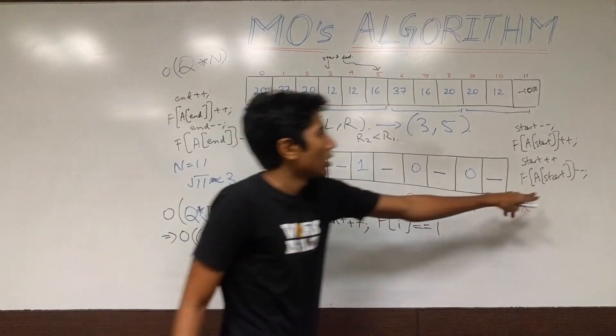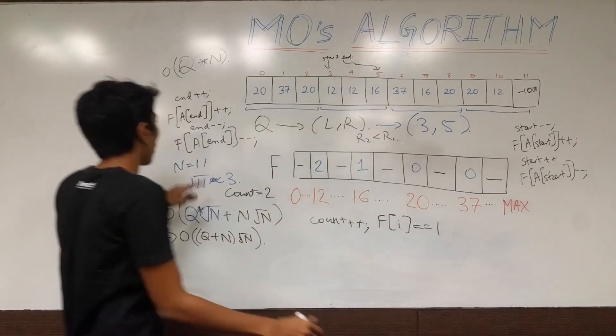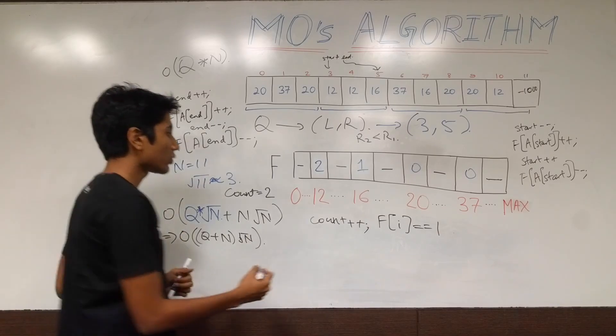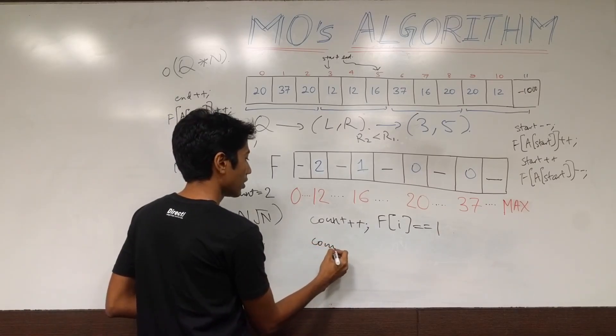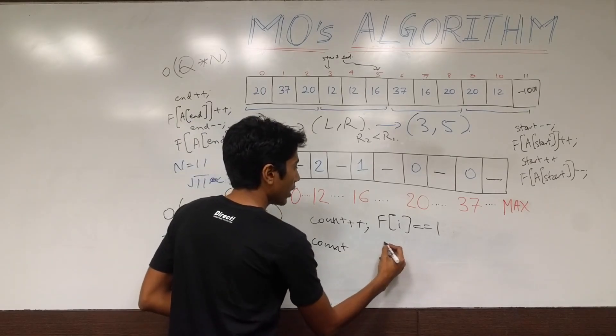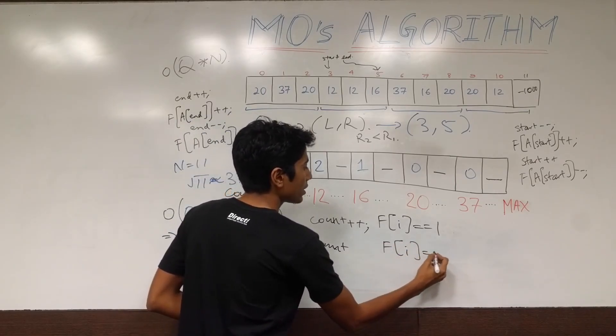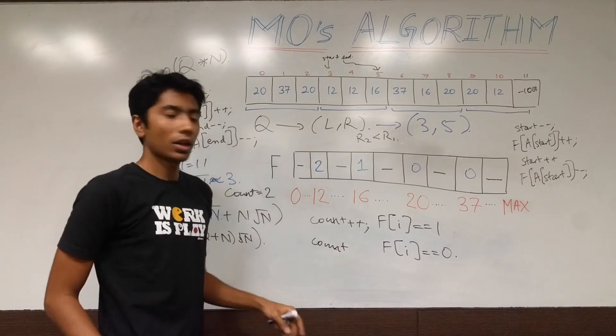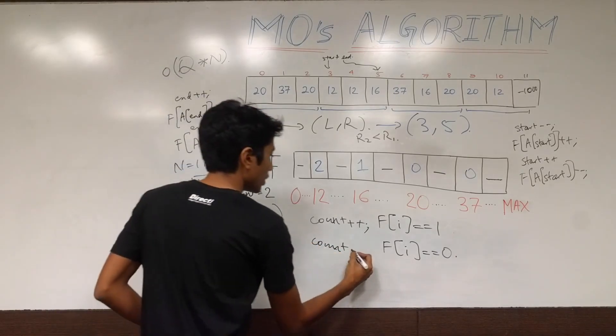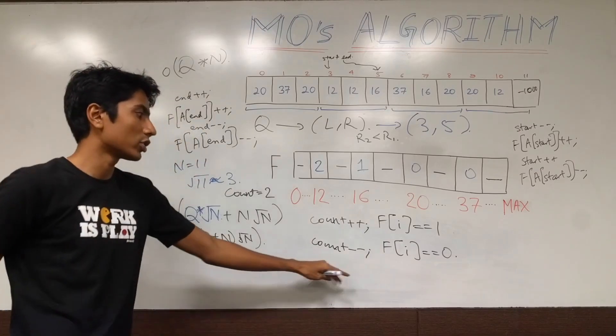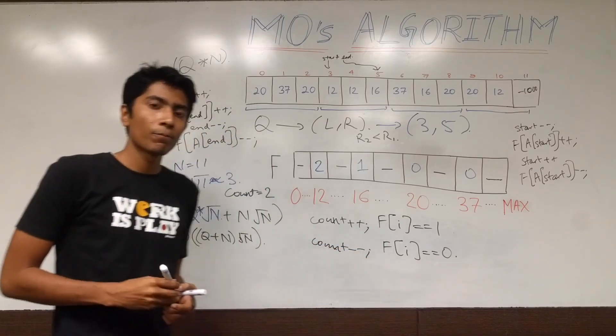Whenever you decrement the frequency of an element, like here or here, that's when you need to check if the frequency of that element is equal to 0 now. If it is, then you need to decrement count, because you just kicked out somebody from your set. Right?